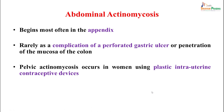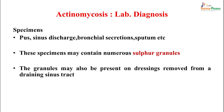Abdominal actinomycosis most often begins in the appendix. It can occur as a rare complication of ulceration, perforation of a gastric ulcer, or penetration of mucosa of the colon. Pelvic actinomycosis may be seen in women who use plastic IUCD devices, which can lead to contamination and infection.